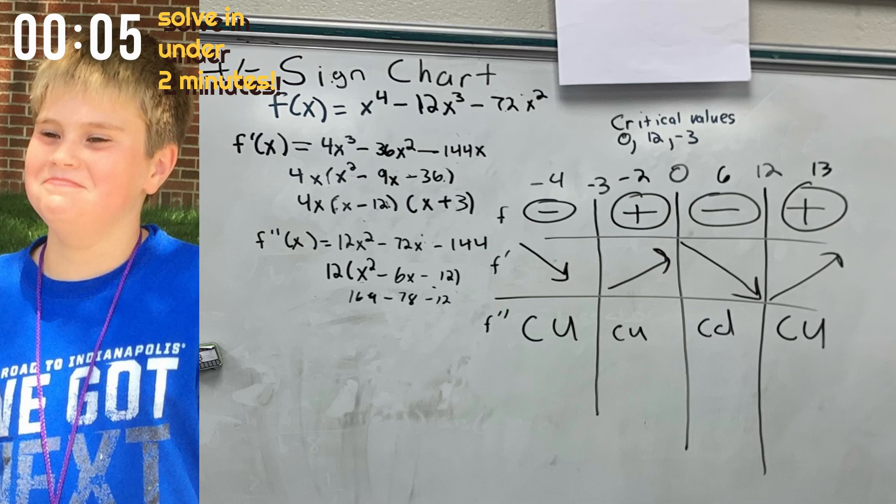Then, using the second derivative there, you can also see that it is concave up. For value 6, you can see that f is negative, and that f prime, the slope, is also decreasing. But for this one, the second derivative shows that it is concave down.